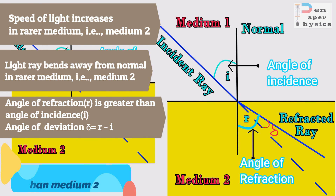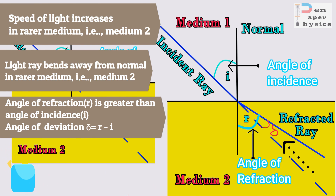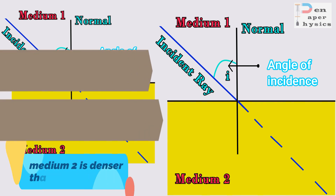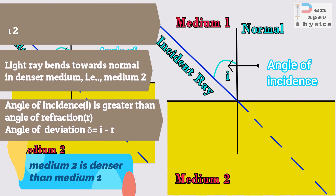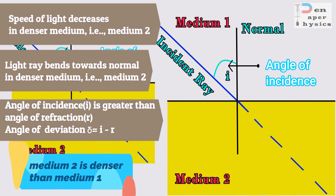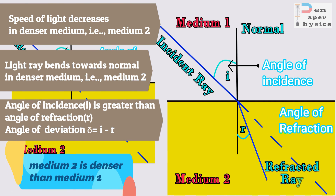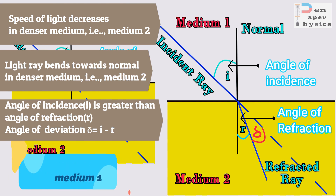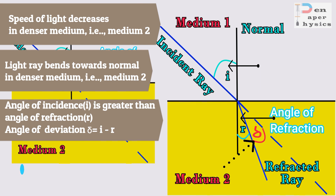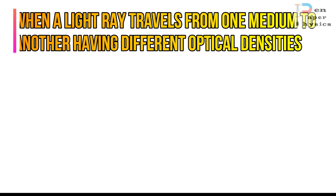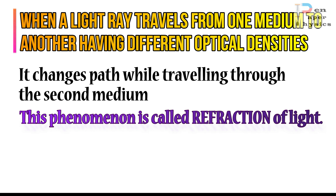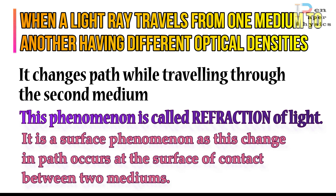The difference between the angle of refraction and angle of incidence gives us the angle of deviation. But if medium 2 is denser than medium 1 — light traveling from rarer to denser — the speed of light decreases and the light ray bends towards the normal. The angle of incidence is greater than the angle of refraction, and the difference between them gives the angle of deviation. When a light ray travels from one medium to another of different optical densities it changes its path, and this phenomenon is called refraction of light.